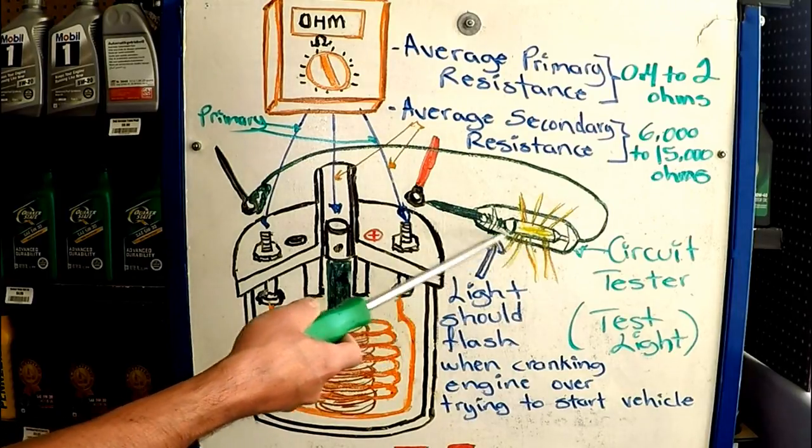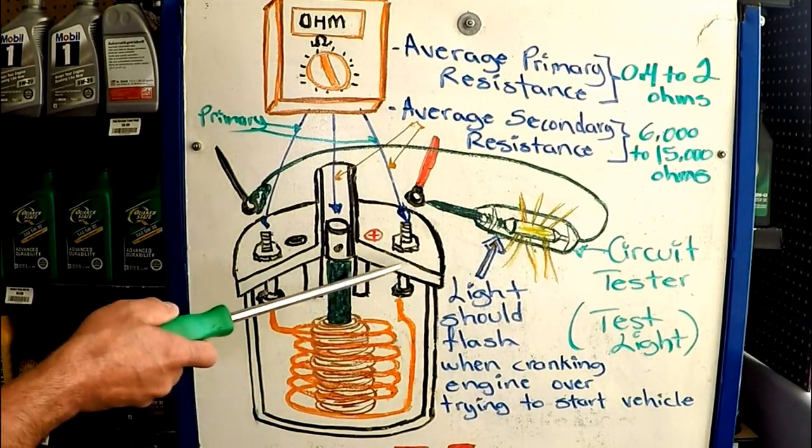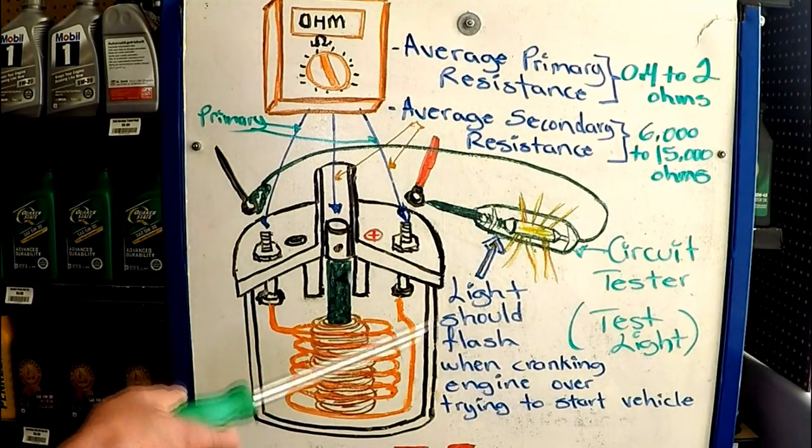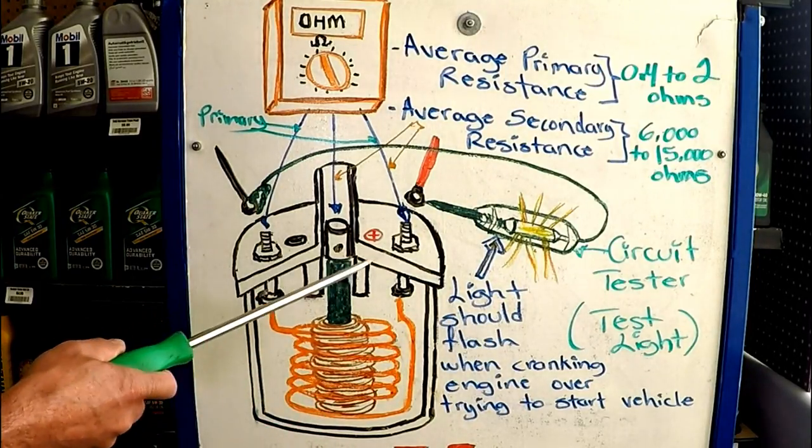If it's yellow, or if it doesn't want to jump all the way across, you have a weak coil and it needs to be replaced. So now that we know the simple test that can be done to identify either a bad coil or a weak coil, let's go over certain things that could happen when you have a weak or a bad coil.